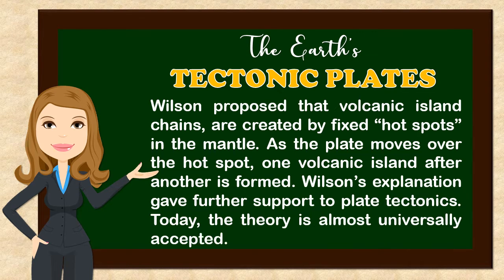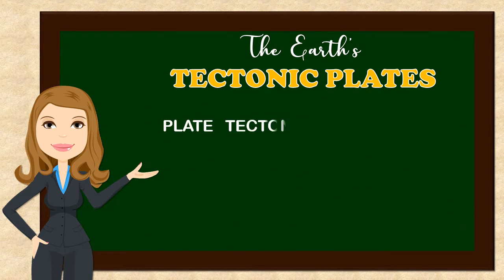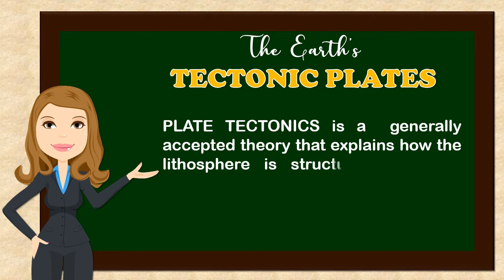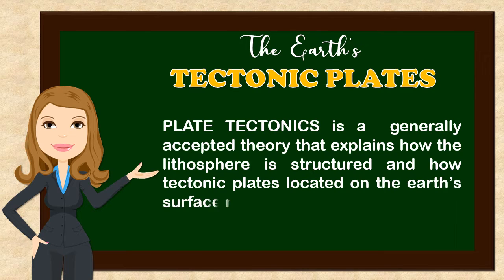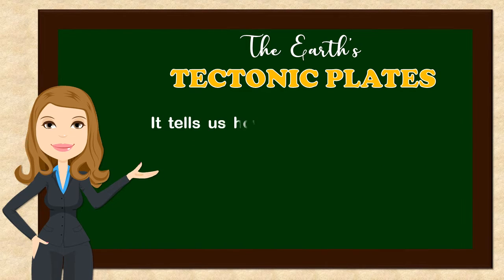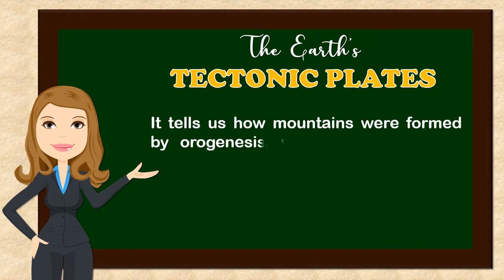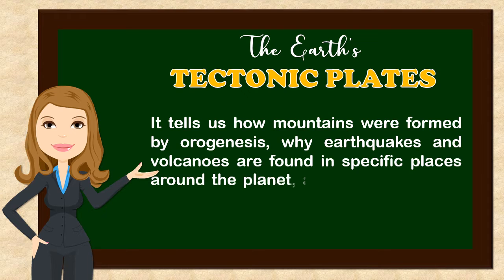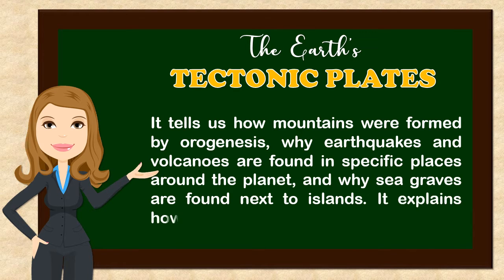Today, the theory is almost universally accepted. Plate tectonics is a generally accepted theory that explains how the lithosphere is structured and how tectonic plates located on the Earth's surface move. It tells us how mountains were formed by orogeny, why earthquakes and volcanoes are found in specific places around the planet, and why sea trenches are found next to islands. It explains how large masses can move.